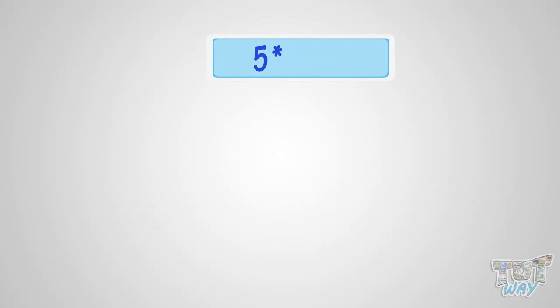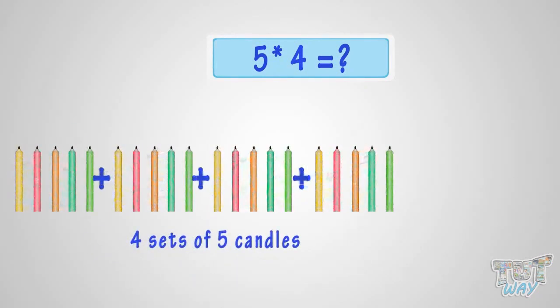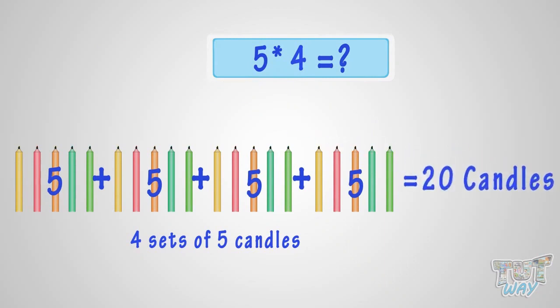What is 5 multiplied with 4? It is the same as four sets of 5 candles. 5 plus 5 plus 5 plus 5 equals 20. So, it is 20 candles. That is, 5 multiplied by 4 is 20.